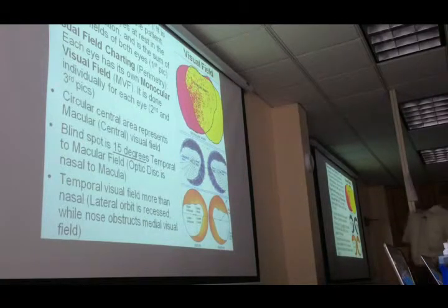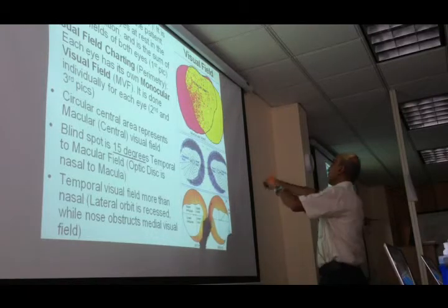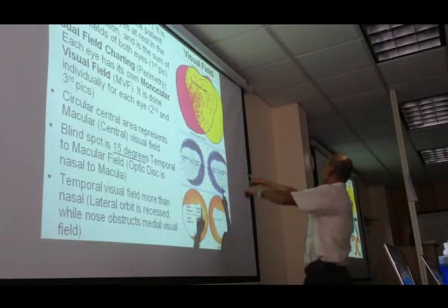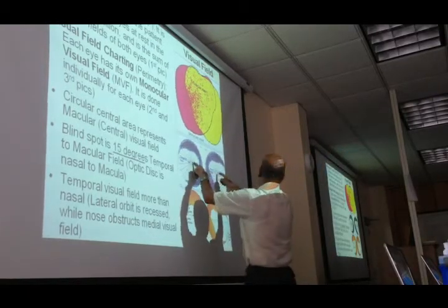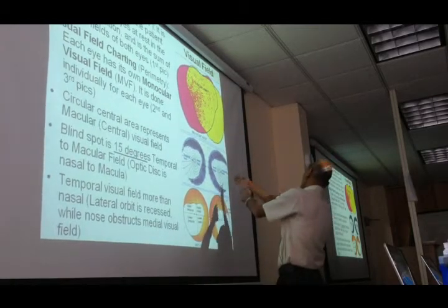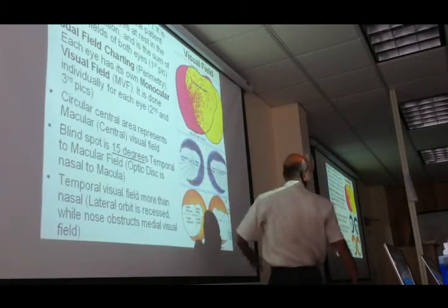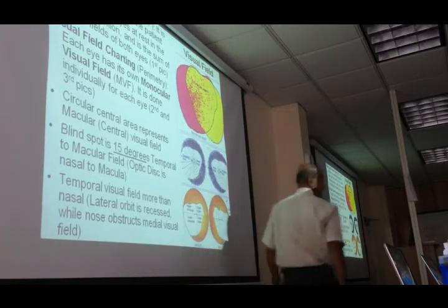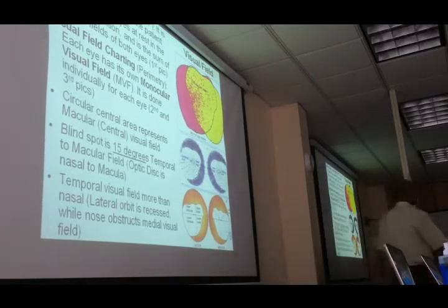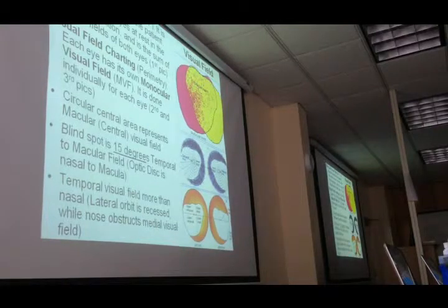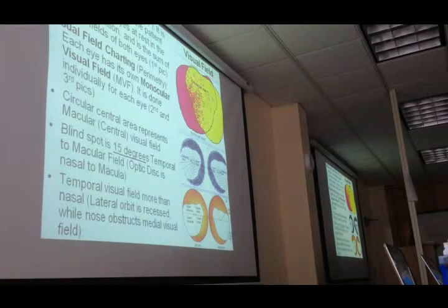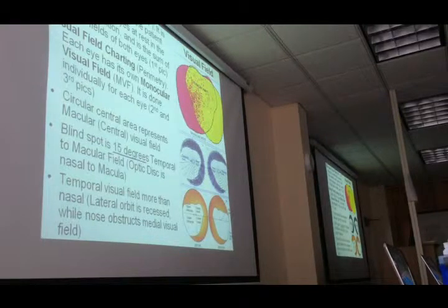Looking 15 degrees to the temporal side of the visual field, there is a black dot — that is the physiological blind spot or physiological scotoma. A scotoma means a blind spot. This represents the area where there are no rods and cones. Why is the blind spot in the temporal part of the visual field? Based on what we know about the fundus — the optic disc is situated nasal to the macula.